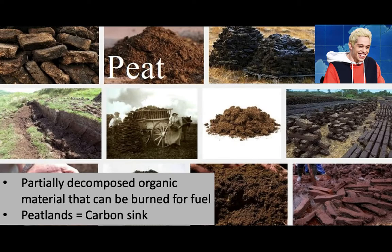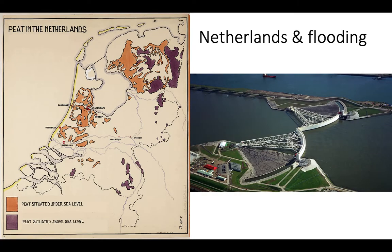Peat is a lesser-known fuel, similar to wood in that it's relatively easy to access. It's a partially decomposed organic material in the very earliest stages of being converted into fossil fuels. Peatlands are often found near swamps or marshes and are a huge carbon sink, with dense soil rich in partially decomposed organic matter that burns well. The Netherlands famously harvested so much peat that they actually lowered their country's elevation, causing significant flooding — they've since had to install major levees because much of the country is now below sea level.